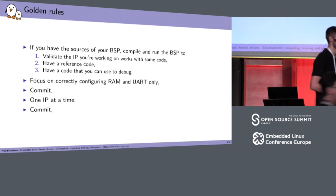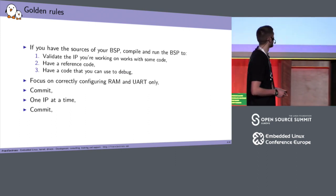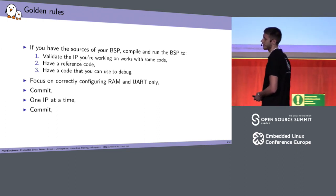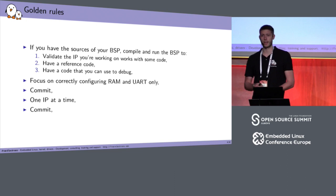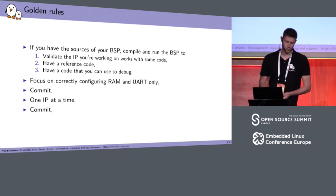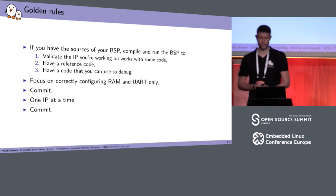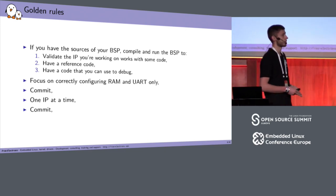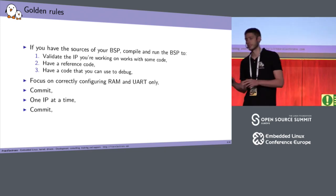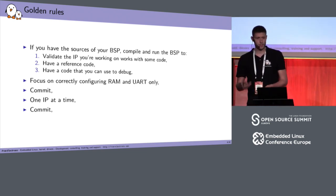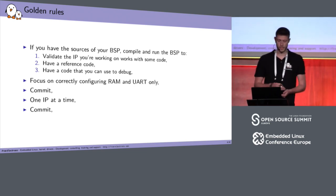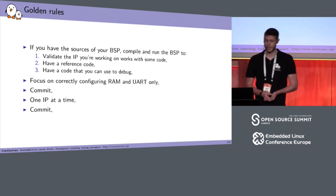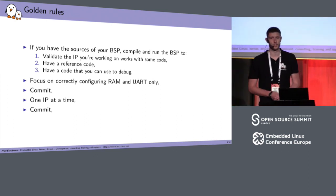A few golden rules when you want to add support for a board. You first really, really want to have the sources of your BSP. And if you have them, you want to compile and run the BSP code on your platform. That way, you can validate the IPs are actually working with some code, even if it's ugly and unmaintainable or whatever. Two, have reference code so that you can use those registers, the workflow, the probing process, everything from the BSP. And have code that you can use to debug. This is really, really, really important and will help you add support for your board.